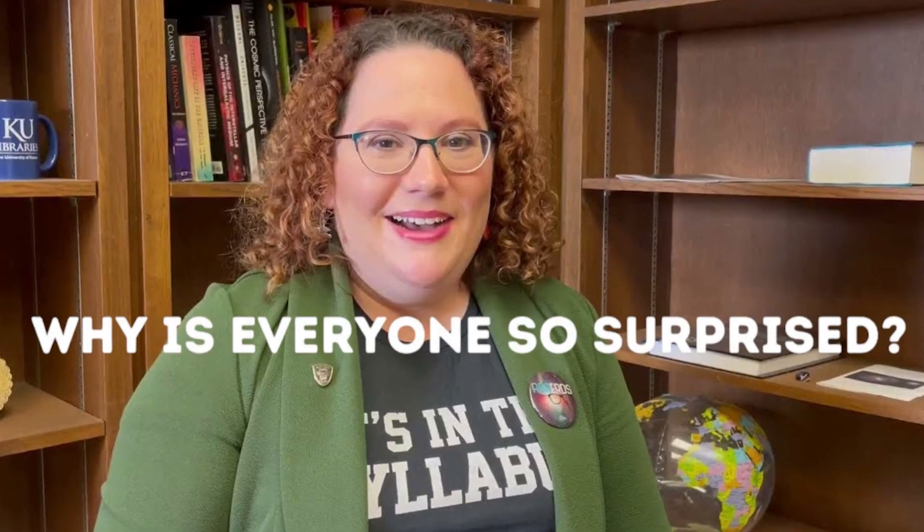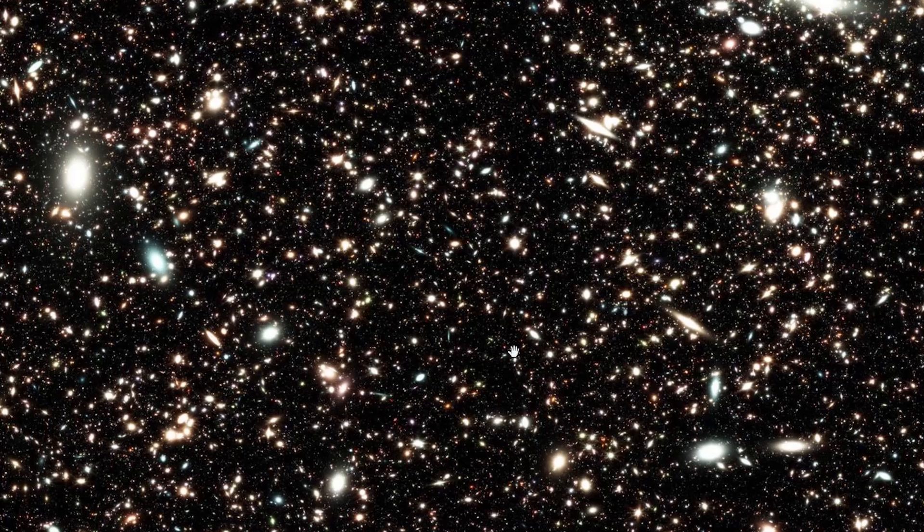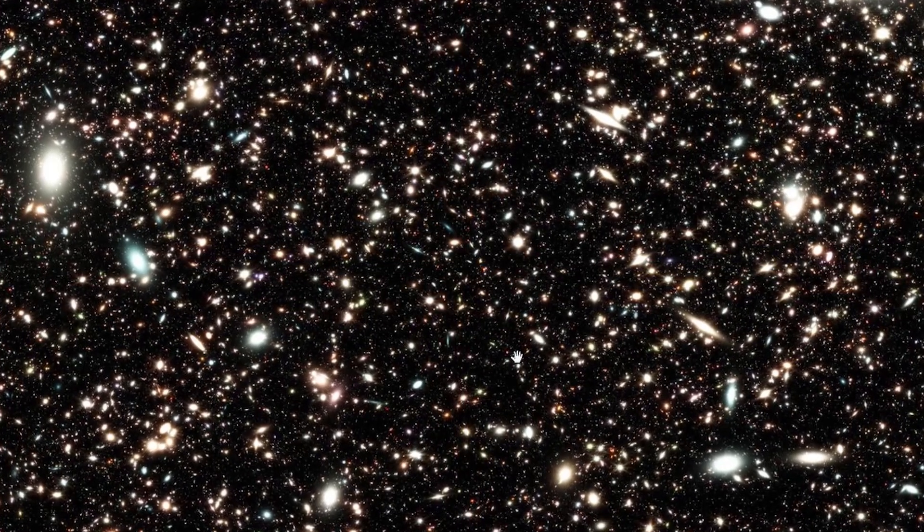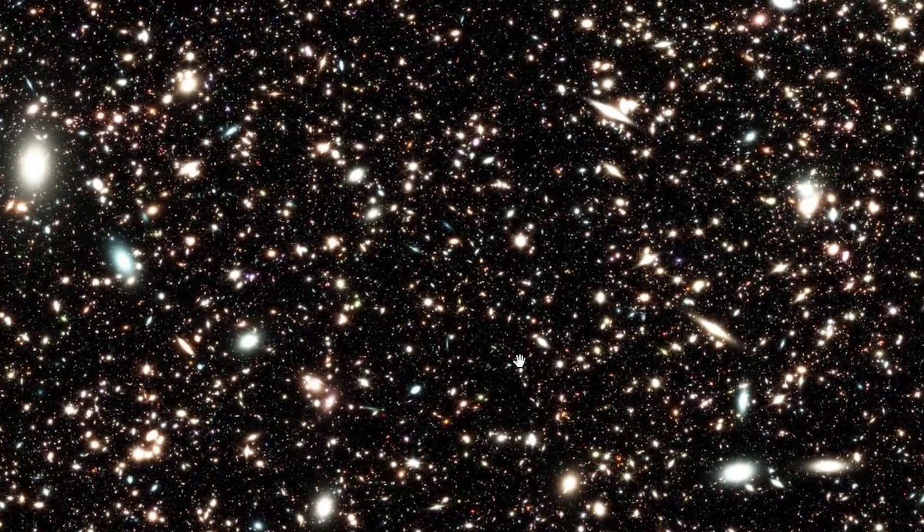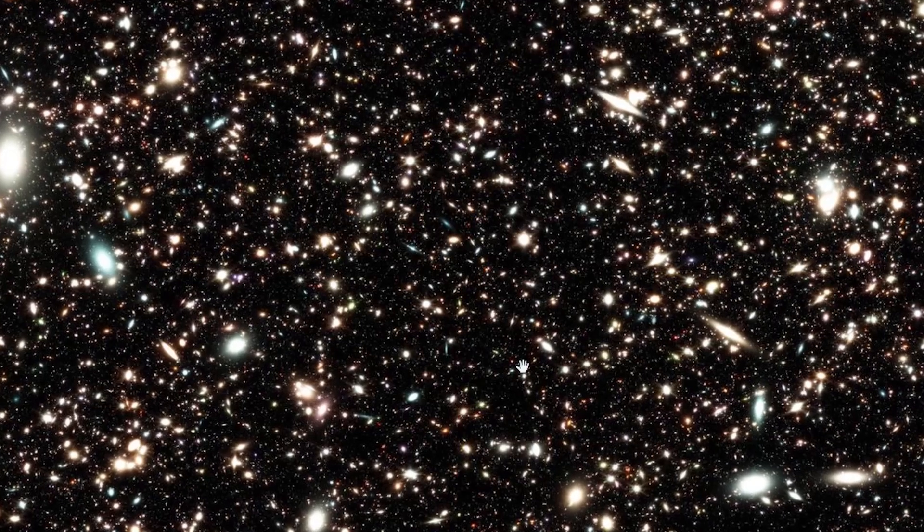You can almost hear Alison Kirkpatrick, a senior astronomer at the University of Kansas, questioning her life's work as she lies in bed. Why is everyone so surprised? Well, the galaxies captured by the James Webb don't behave as you would expect according to the Big Bang hypothesis. They are too small, too uniform, and too old. Also, there are too many of them.